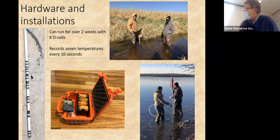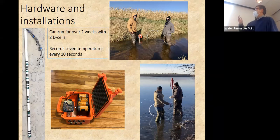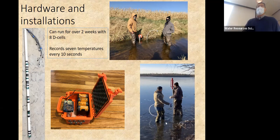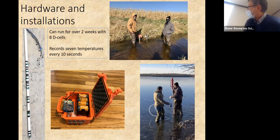Here's our installation — each taped area is one of those temperature sensors. We run them all to connectors, into our box, and here's our little Arduino with eight D-cells. We can run this thing for over two weeks on those D-cells. The Arduino has a clock with a keep-alive battery and a storage card. Every 10 seconds it records seven temperatures and dumps that onto the card. We've installed these in ice in Wisconsin lakes and in cold creeks.